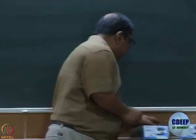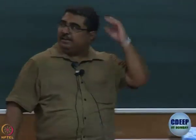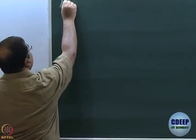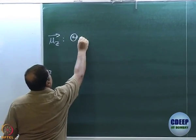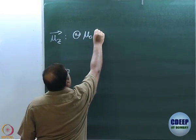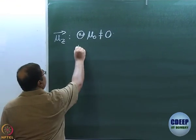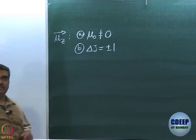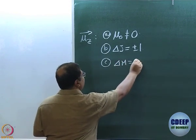So far we have been able to establish the conditions for microwave activity involving the Z component of the dipole moment. The conditions we have established while utilizing the Z component are: first, the molecule must have a permanent dipole moment — μ₀ should be non-zero; secondly, ΔJ must be ±1; and thirdly, ΔM must be equal to 0.